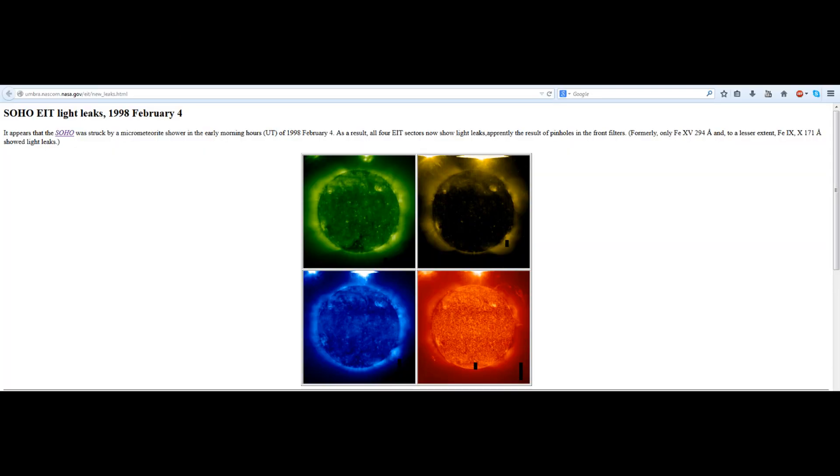Now, some people have found this link describing a micrometeorite hit that occurred to Soho in February of 1998. You can see that those bright regions appeared in the exact same spots at that time as well. Now, in the previous image, if you look carefully, you can see that the top of the image is actually canted at an angle.